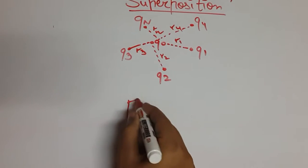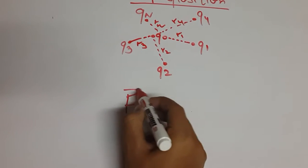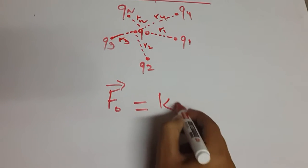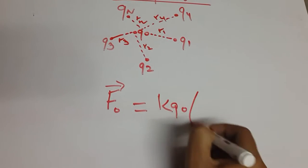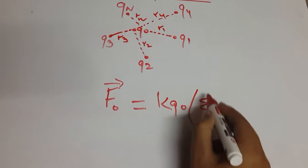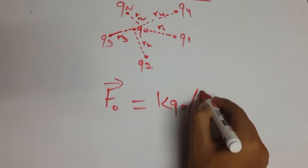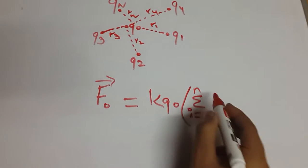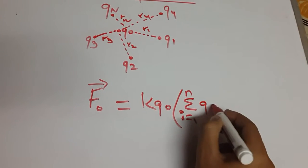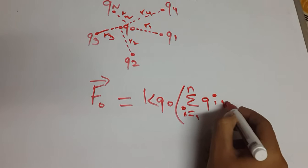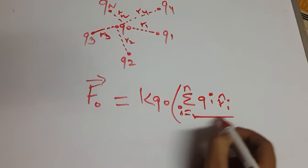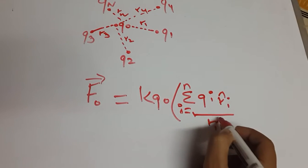Now the total force is given by f0 equals k q0 into sigma or sum of, from i which is equal to 1 till n, qi ri cap i upon ri square.